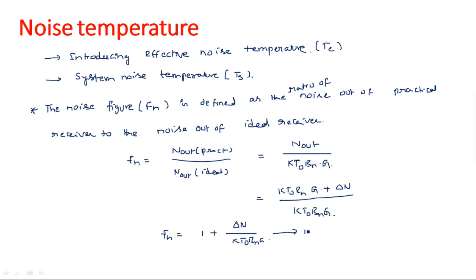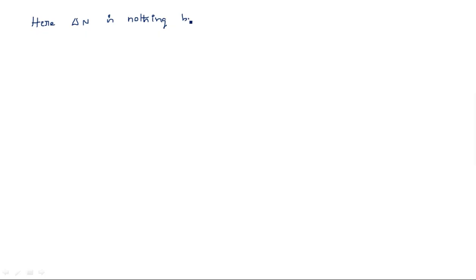Using this equation, we need to find the effective noise temperature. How do we calculate the effective noise temperature? If we focus on ΔN, we get TE. ΔN is nothing but the noise introduced by the network itself, without the effect of any other external parameters.